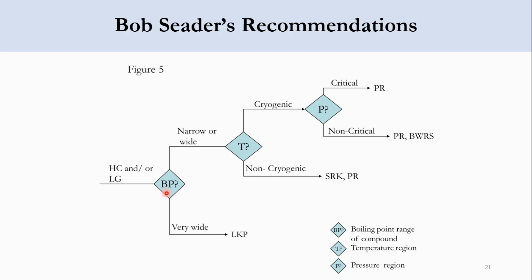Going to Figure 5, we check the boiling point range of compound. If it is very wide, use LKP. If it is narrow or wide, check the temperature region, whether cryogenic or non-cryogenic. If non-cryogenic, select SRK or PR, equation of state methods. If cryogenic, check the pressure region, whether critical or non-critical. If critical, use PR which is Peng-Robinson. If non-critical, use PR or another equation of state.